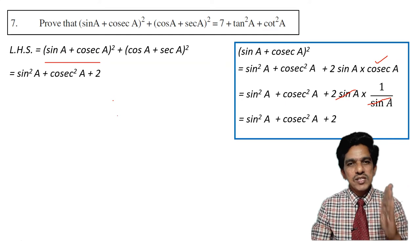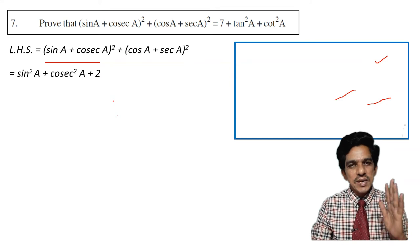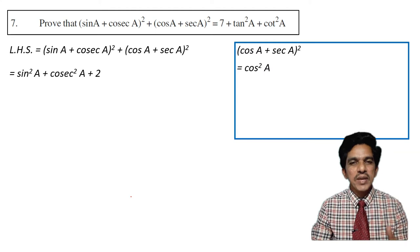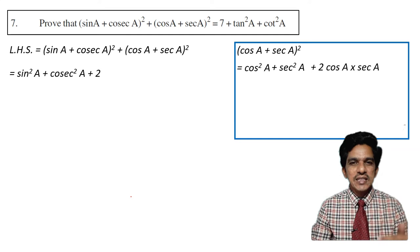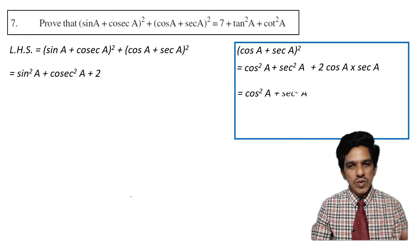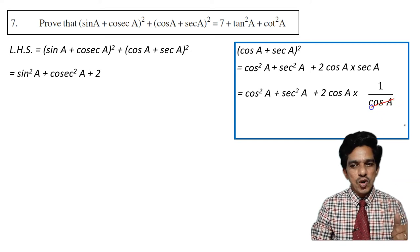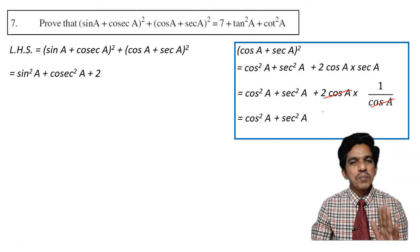Similarly, we find the value of the second term, cos a plus secant a whole square. Expanding using a plus b whole square, this becomes cos square a plus secant square a plus 2 cos a into secant a. Since secant equals 1 by cos, we have 2 cos a into 1 by cos a, which equals 2. So we are left with cos square a plus secant square a plus 2.